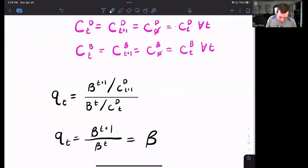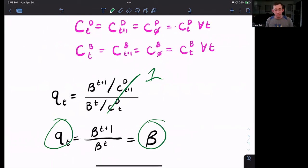We know that CT plus one D over CTD, that's equal to one. So we know that QT is equal to beta, and that is going to be very helpful as we go into the budget constraints.